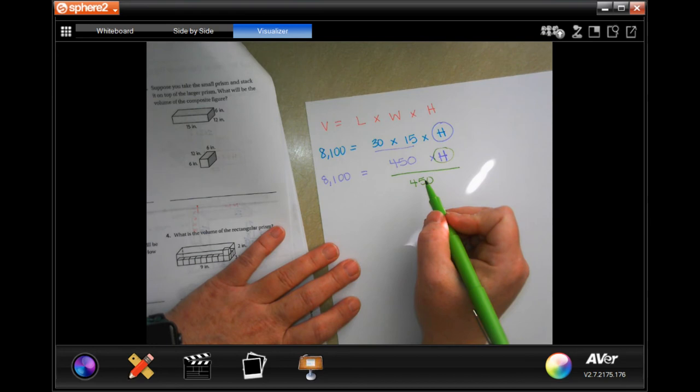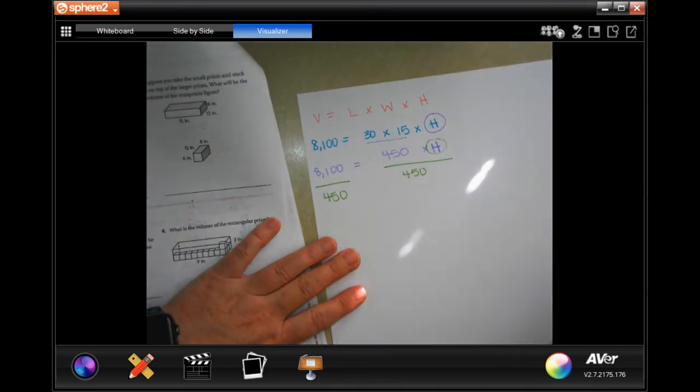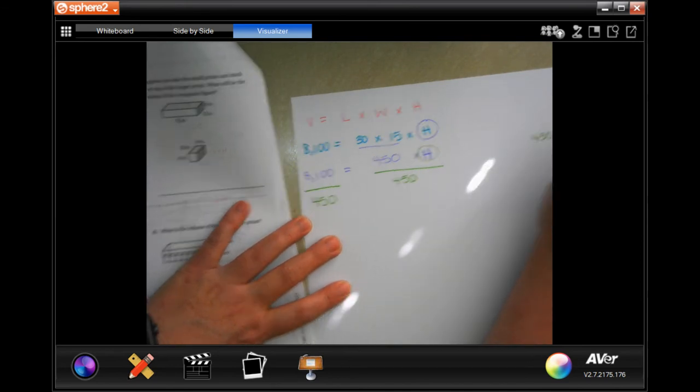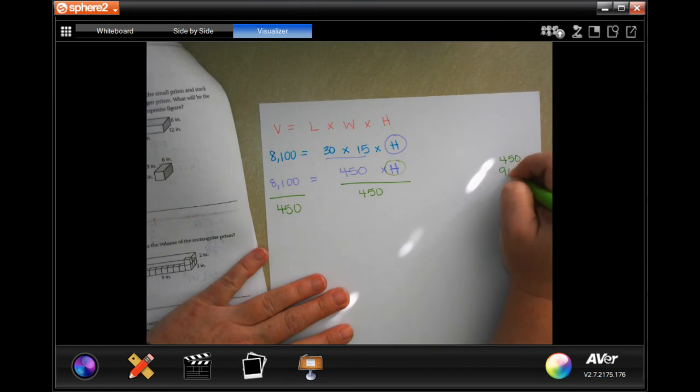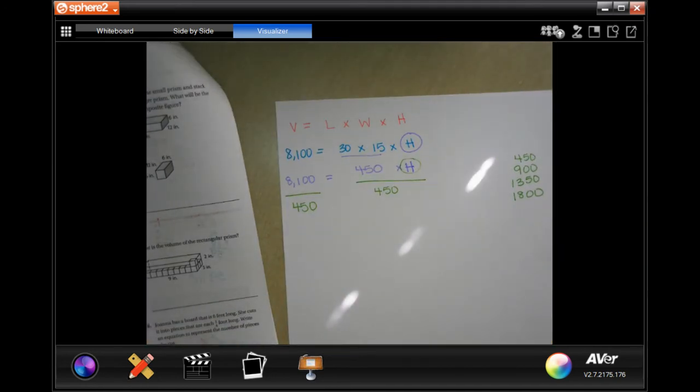Whatever I do to this side of the equal sign I have to do to this side, so I divide by 450 over here. On the side here I'm going to write my multiples of 450. I have 450, then 900, then 1,350, then 1,800.